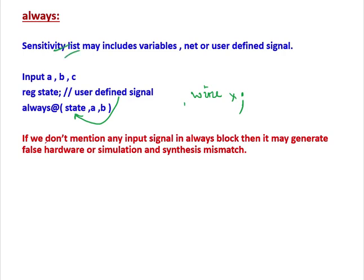The sensitivity list may include any kind of variables — nets, where nets means input or output, or user-defined signals. So if we write input A, B, C, these are nets. If I write 'state', this is a user-defined signal. Even signals like Y, R, X can be user-defined signals. You can include user-defined signals inside the parenthesis as well. So here, 'state' is a user-defined signal.